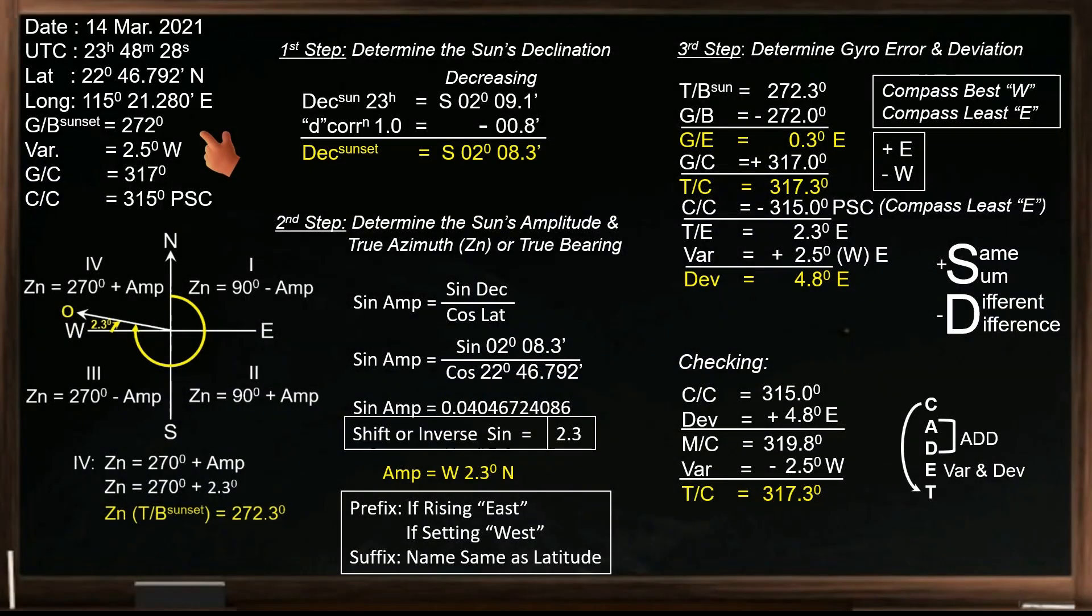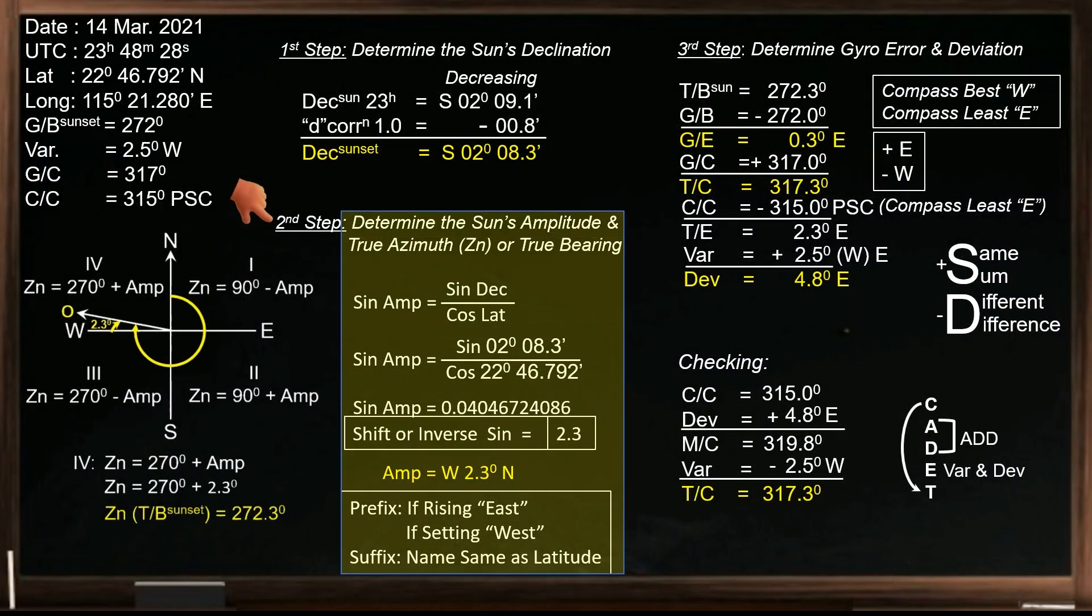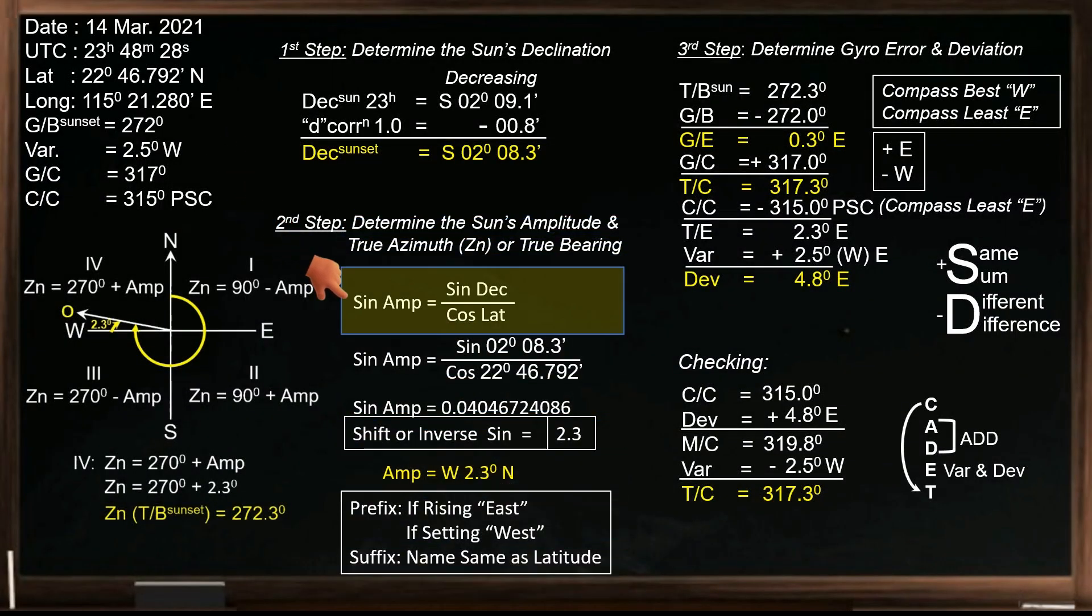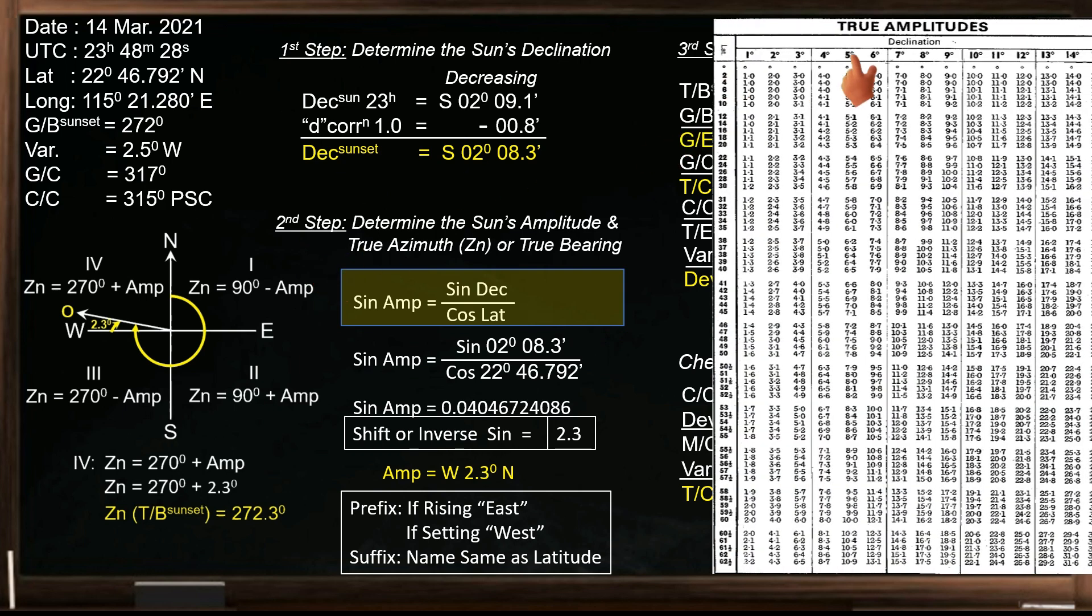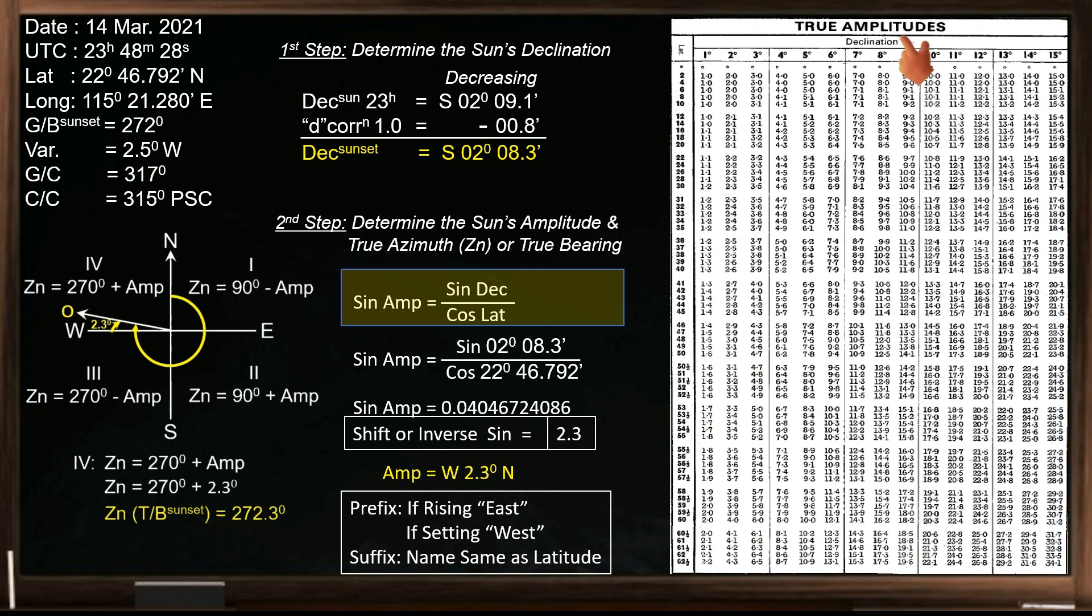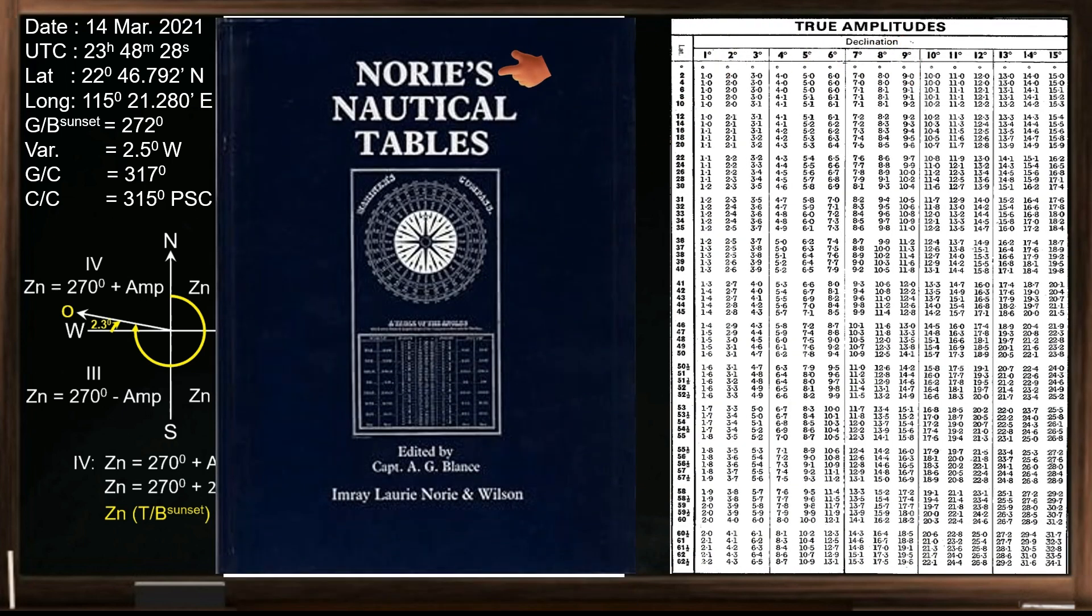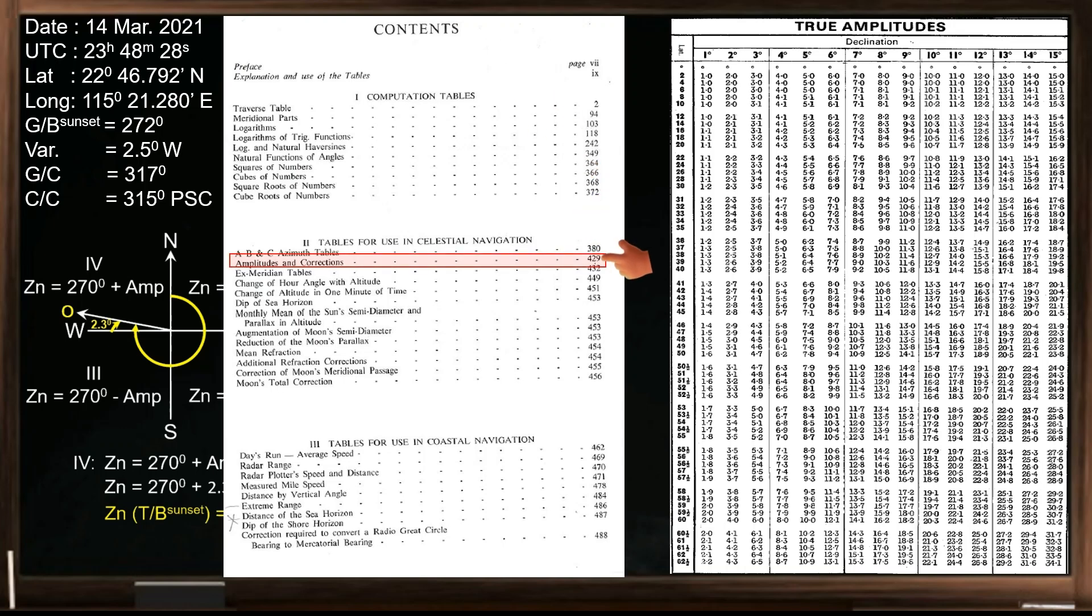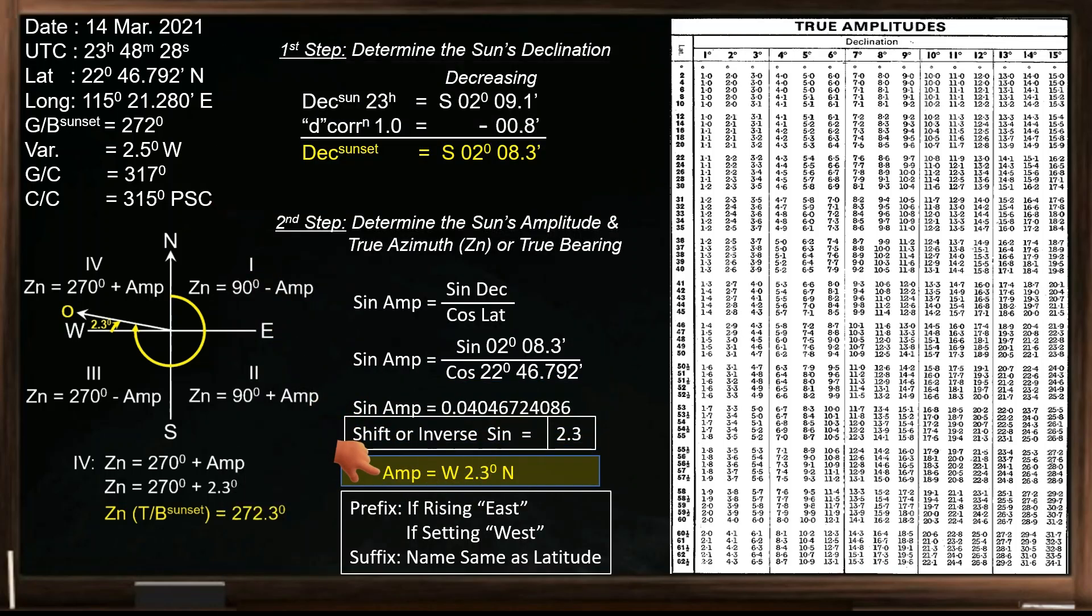In this scenario, we'll focus on the second step. Instead of using the formula, we'll utilize the amplitude table provided in Nori's nautical table, which can be found on page 429. I'll use the same scenario as my previous video so we can compare the results of both methods. To find the amplitude of the body, we need the declination and the latitude at the time of taking the compass bearing.